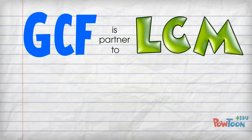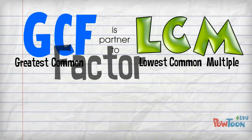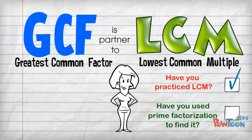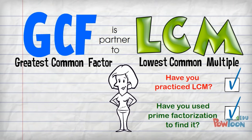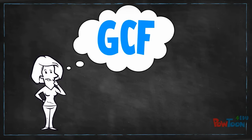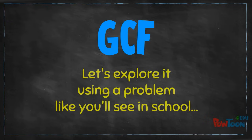GCF is the partner to LCM. You have learned how to find the lowest common multiple; now we learn how to find the greatest common factor. If you've practiced LCM and have used prime factorization to find it, then you are ready for GCF, which is also known as HCF or highest common factor. What is GCF? The greatest common factor is the largest value that divides exactly into two or more numbers. Let's explore it using a problem like you'll see in school.